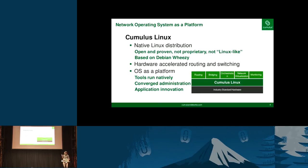Cumulus Linux itself is a Linux distribution based on Debian, and it is really based on Debian — you SSH in and you get a bash prompt. That also allows us to leverage quite a bit of automation tools, monitoring tools, and all the things that are already developed for Linux that people use on servers. The only difference is, unlike a server, we have a forwarding ASIC that can do line rate forwarding out all the various front panel ports, up to 32 by 100 gig these days.